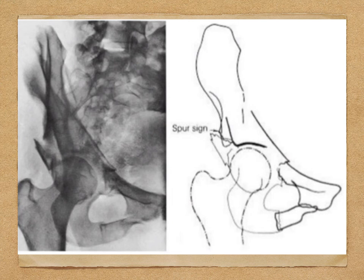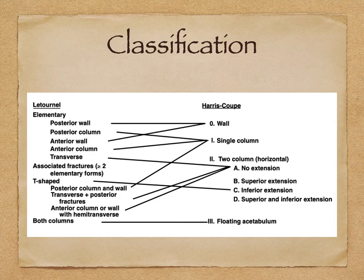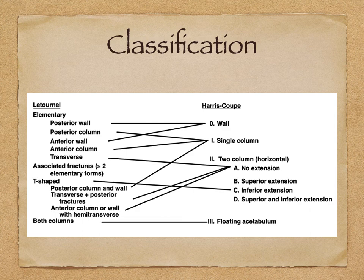It is important to know about the classification system. Fractures are divided into two parts: elementary and associated fractures, which involve more than two elementary forms. The elementary fracture patterns are posterior wall, posterior column, anterior wall, anterior column, and transverse. Associated fractures could be T-shaped, posterior column and wall, transverse plus posterior wall, anterior column or wall with hemi-transverse, and both column fractures.